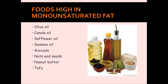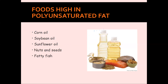Foods high in monounsaturated fats include peanut oil, olive oil, canola oil, and vegetable oils used for cooking and salad dressings. Canola oil is also commonly used for making margarine. Foods high in polyunsaturated fats include corn oil, soybean oil, sesame oil, and sunflower oil, which are commonly used in salad dressings and cooking. Nuts and seeds also contain polyunsaturated fats — enough to make them a rather high-calorie snack depending on serving size. Fatty fish like salmon and tuna are also good sources.